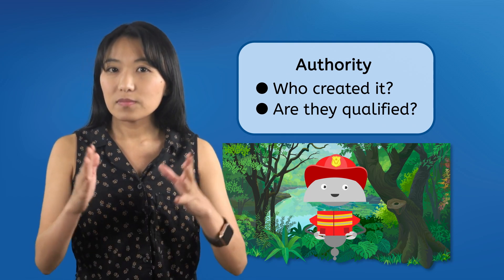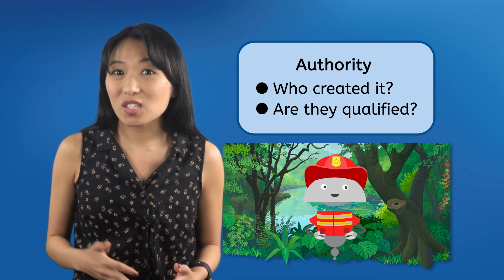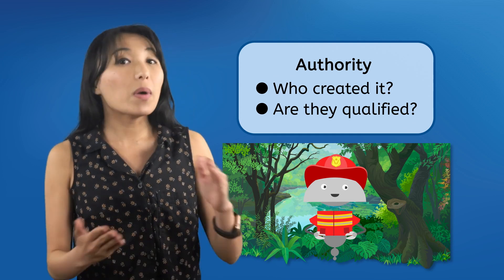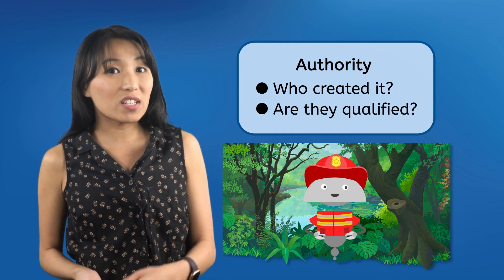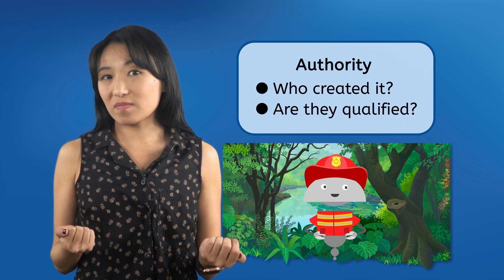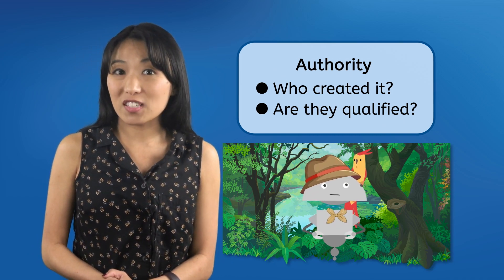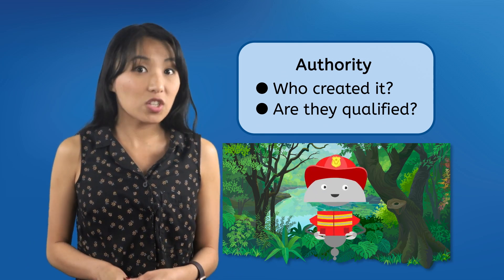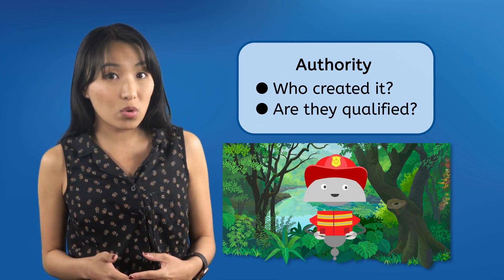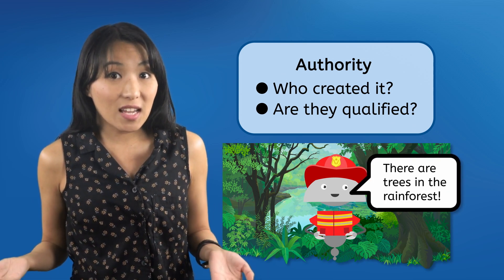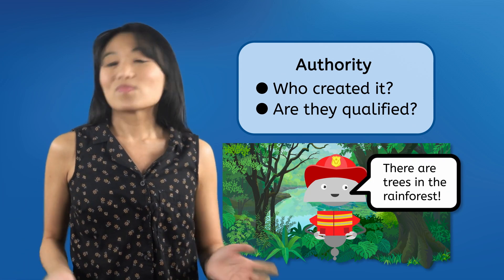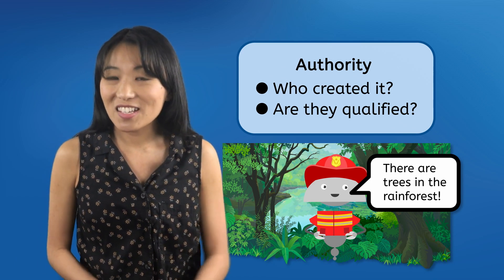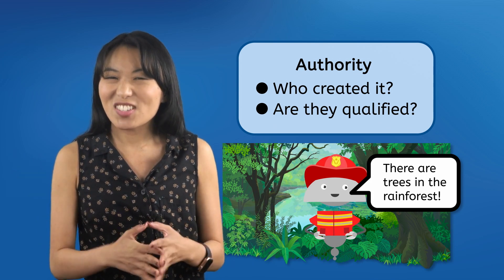One small disclaimer here. The authority test only checks whether there's good reason to believe the creator is an authoritative source of information, but it doesn't automatically guarantee that the information they've given is true or false. That tropical ecologist isn't perfect and could easily have made a mistake while reporting the facts. And just because a firefighter isn't an authoritative source doesn't mean anything they say about the rainforest is automatically wrong. Credibility is based on a lot more than just authority, which is why there's an entire TRAP test, not just the A test.